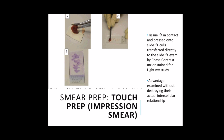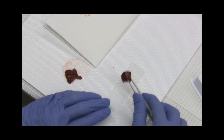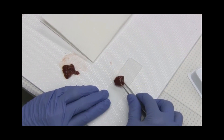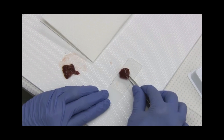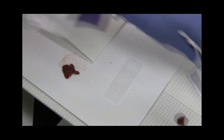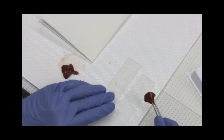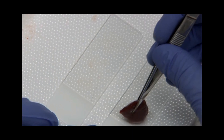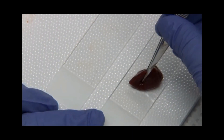Lastly, under smear preparation is touch preparation or the impression smear. This is a special method whereby the surface of a freshly cut piece of tissue is brought into contact and pressed onto the surface of a clean glass slide, allowing the cells to be transferred directly to the slide for examination by phase contrast microscopy or stained for light microscopic study. It has the advantage that cells may be examined without destroying their actual intercellular relationship and without separating them from their normal surroundings.